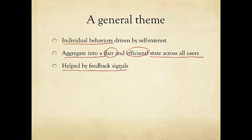Some feedback signals are explicit — a network element tells you a specific action to take. Sometimes they are implicit: you measure something, for example the current SIR at time t, and then use that implicit feedback to adjust your own individual behavior in the next iteration.